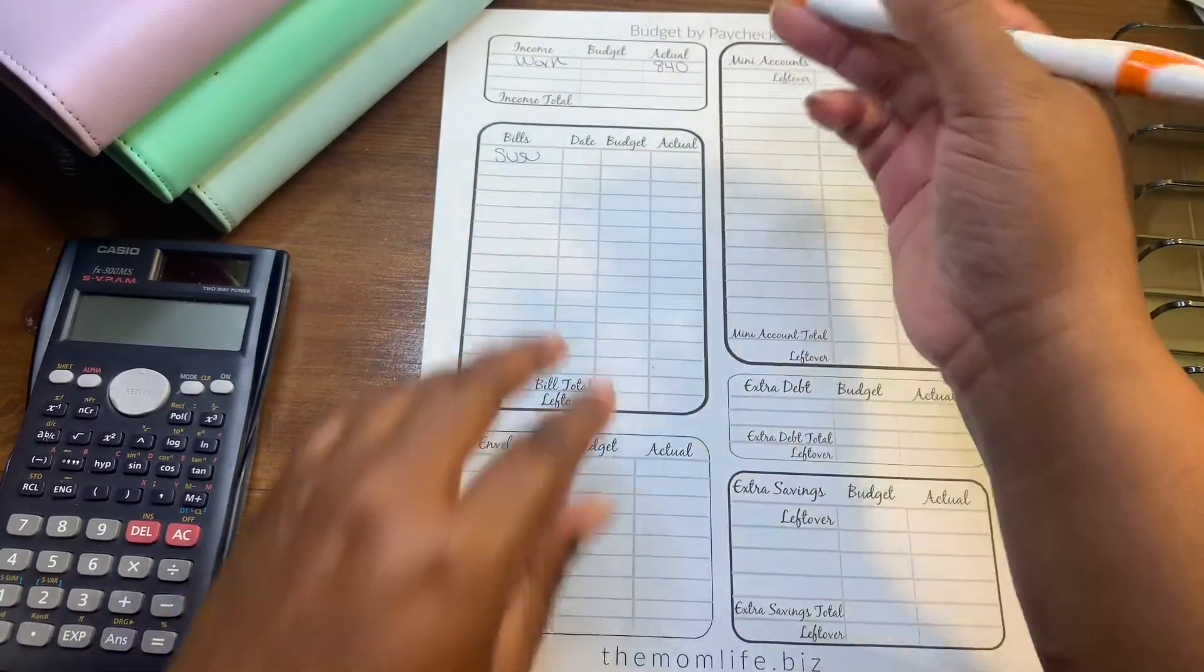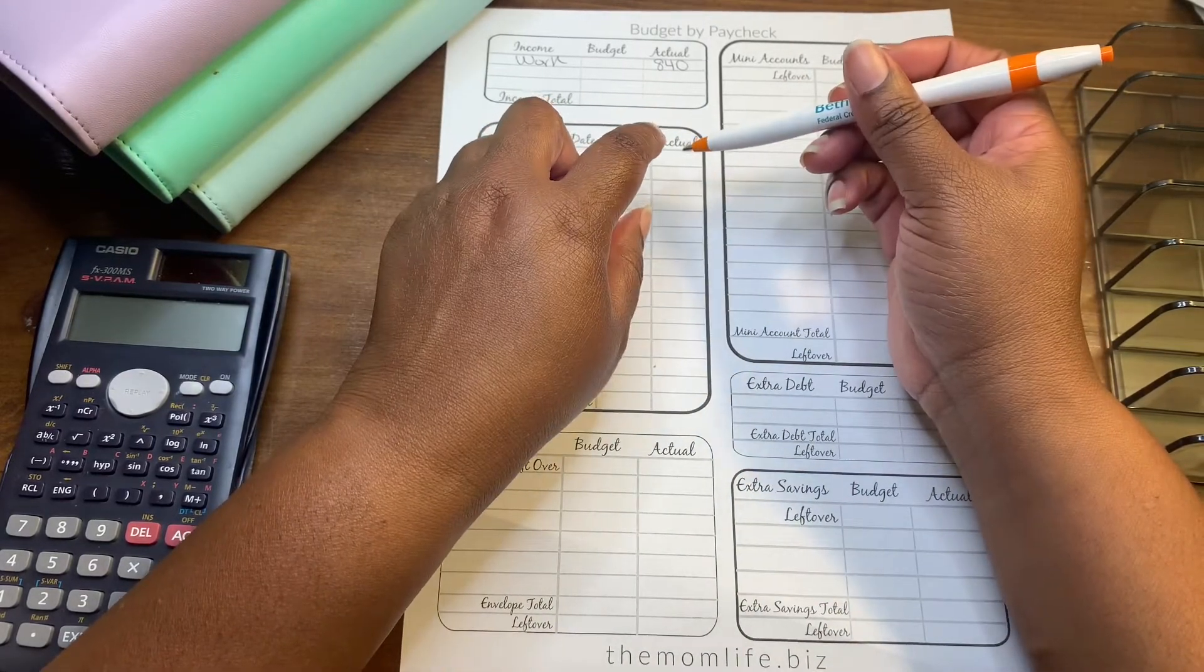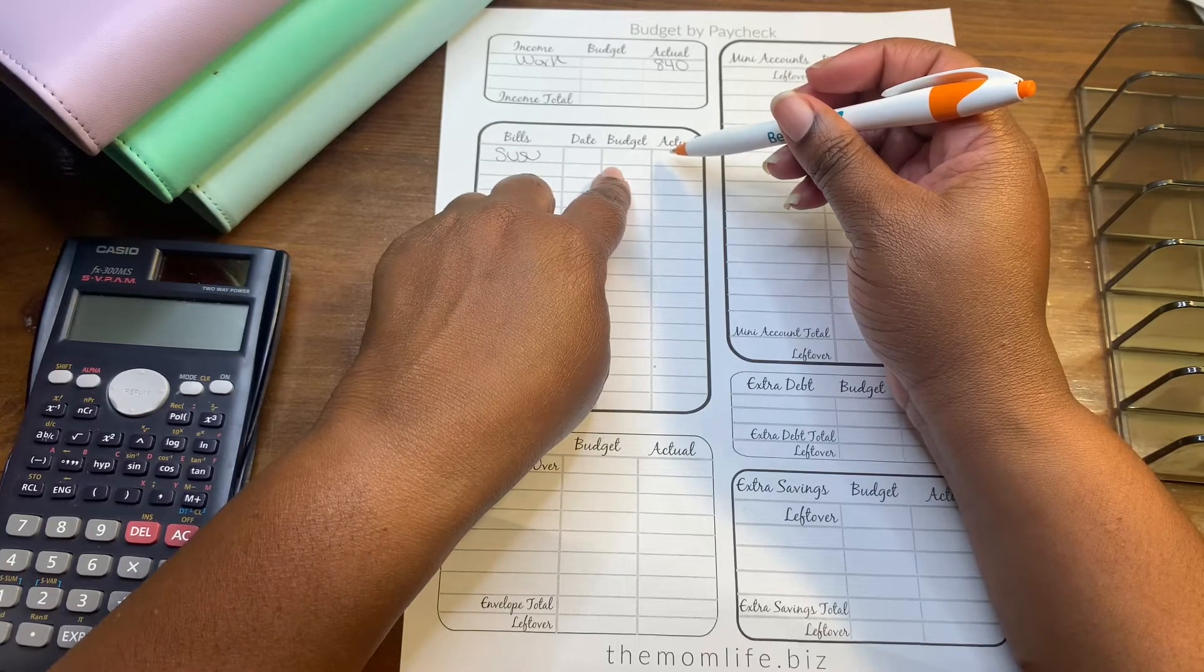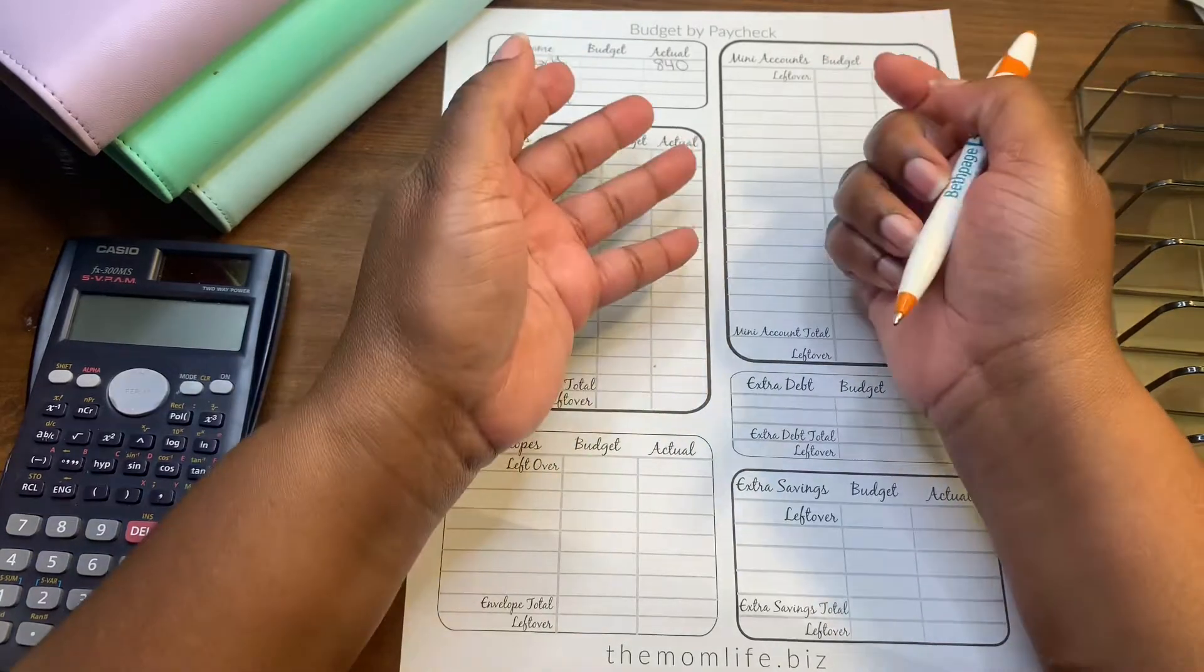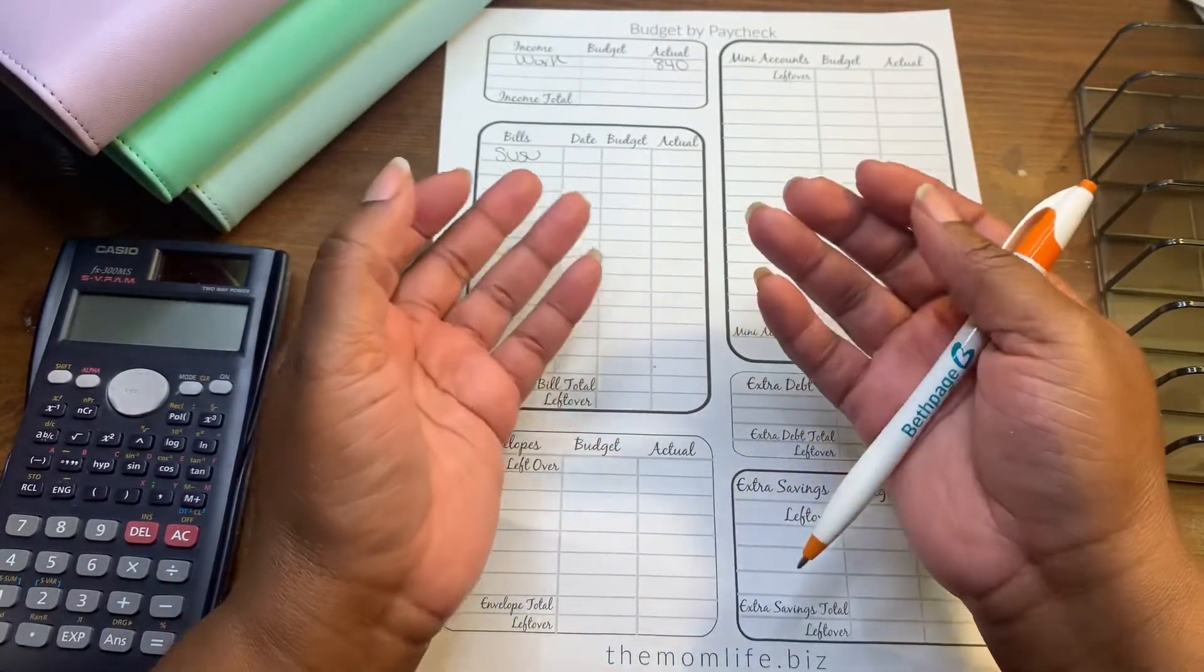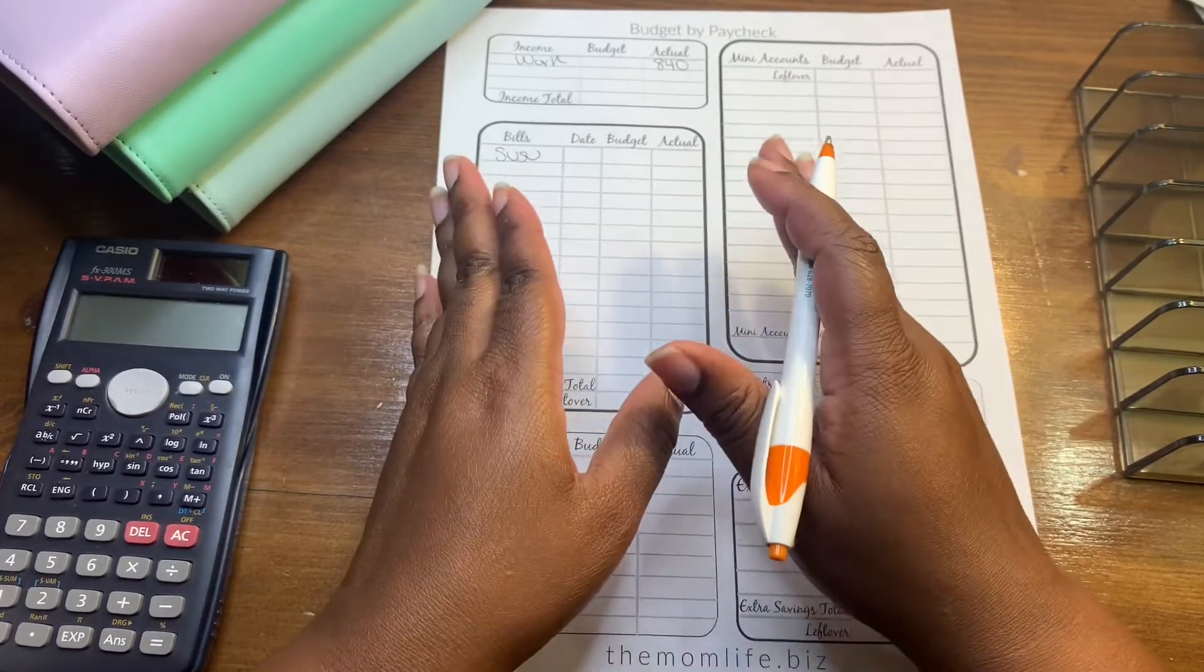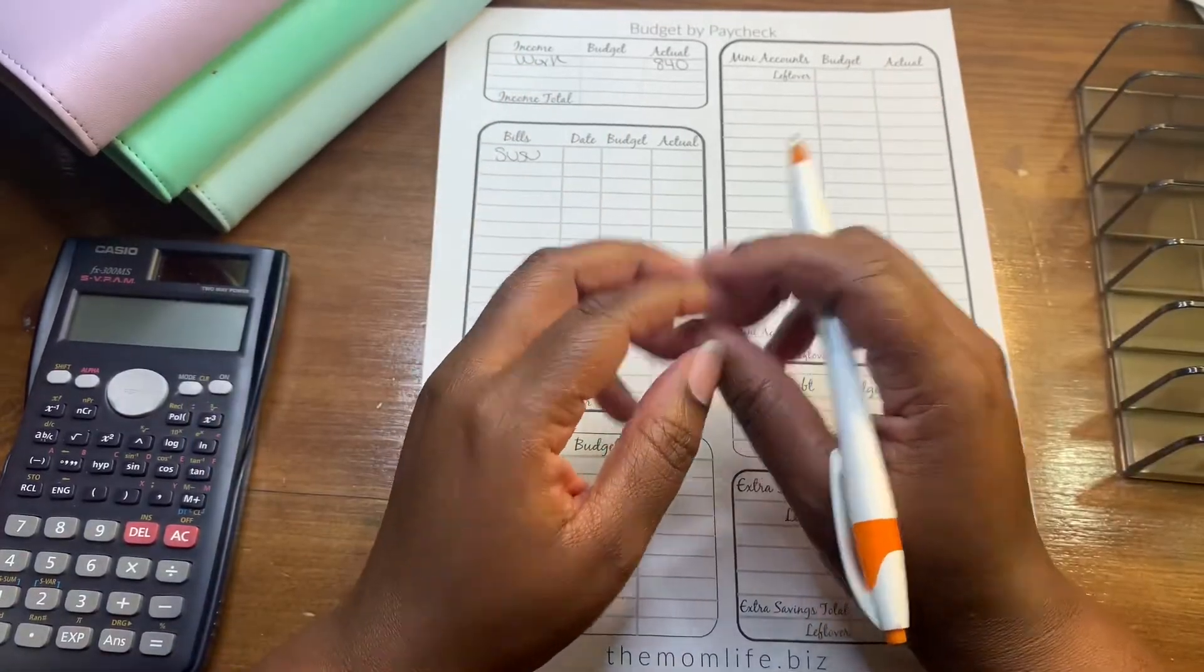$840 is what we have to work with. So first up is susu. I did find a new susu to join and that will be starting this Friday, which is like the eighth or the ninth. I'll be doing the new susu. It's literally the same amount that I was doing before, so it's perfect. My hand doesn't happen until the end of January.